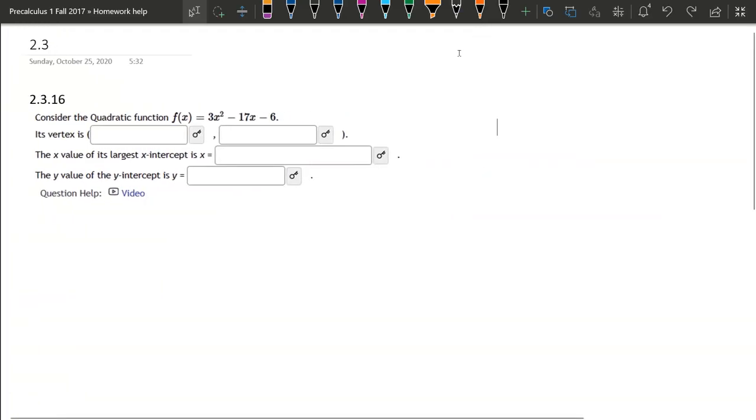So we're about to do a quadratic question. We're going to find the vertex, and then we're going to find both x-intercepts. This question is only asking for a larger one, but we're going to find both of them, and the y-intercept.